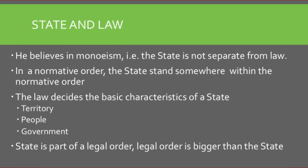Regarding the relationship between state and law, Kelsen believes in monism — meaning the state and the law are actually one entity; the state is not separate from law. In a normative order, the state stands somewhere within that normative order, meaning the constitution, the parliament, and the state are all one entity. The law decides the basic characteristics of a state. The state cannot exist without the law, and the law empowers the state. According to Kelsen, the state is part of a legal order, and the legal order is bigger than the state itself.